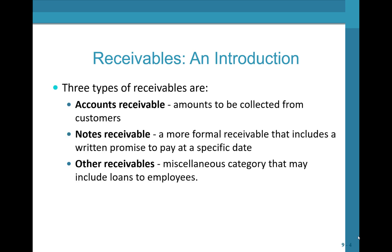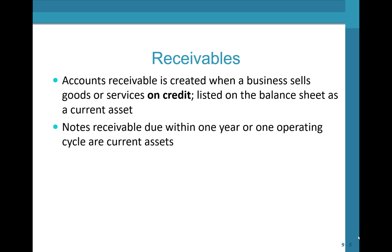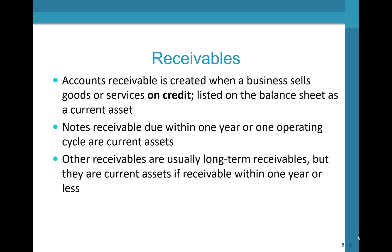Three types of receivables are: accounts receivable, which are amounts to be collected from customers; notes receivable, a more formal receivable that includes a written promise to pay at a specific date; and other receivables, a miscellaneous category that may include loans to employees or amounts due from the government. Accounts receivable is listed on the balance sheet as a current asset. Notes receivable due within a year are also current assets, and other receivables are usually long-term but considered current if due within a year.